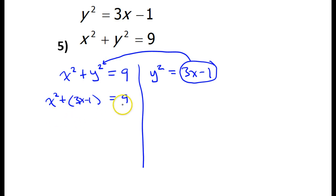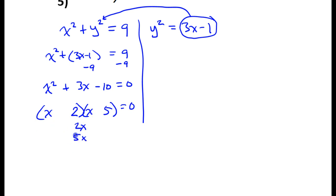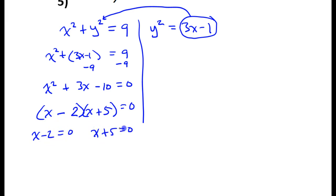Subtracting 9 from both sides gives x-squared plus 3x minus 10 equals 0. This factors as (x minus 2)(x plus 5) equals 0. Setting each factor equal to zero: x minus 2 equals 0 gives x equals 2, and x plus 5 equals 0 gives x equals negative 5.